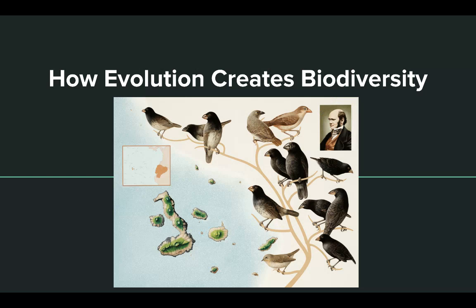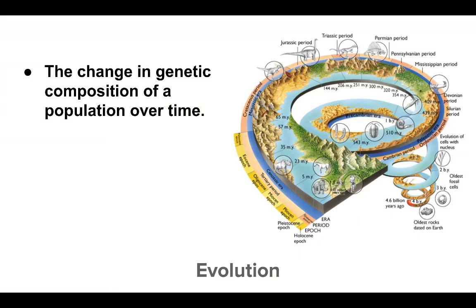Moving on, we're going to look at how evolution creates biodiversity. This is an extremely long process. We already know that the Earth has been around for 4.6 billion years, and in that time there's been quite a change — and it's all been through evolution.